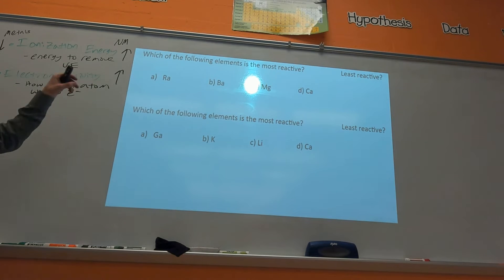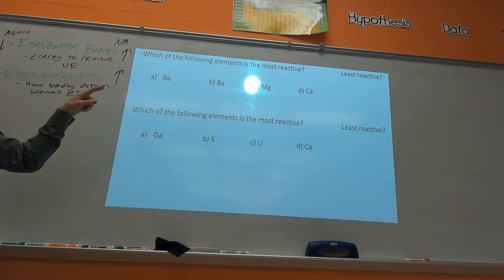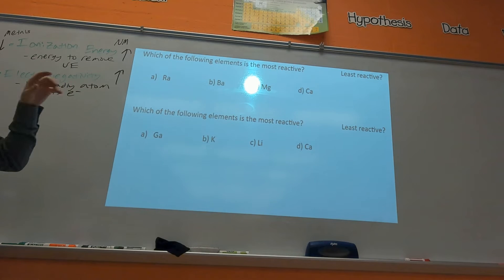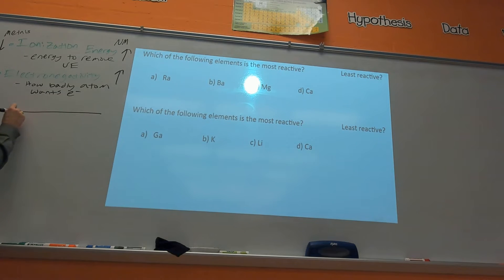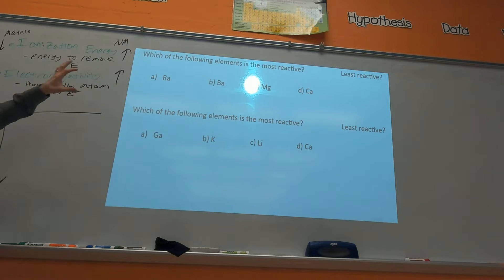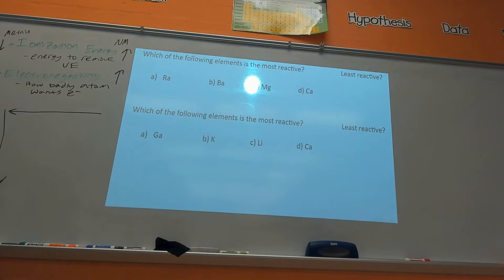Let's go over the warm-up: which of the following elements is the most reactive? Getting into metal reactivity — this is how you want to think about it. Metal reactivity increases from right to left on the periodic table, and as you go down on the periodic table it also increases. So let's place these elements on the periodic table: radium (Ra) is right there.